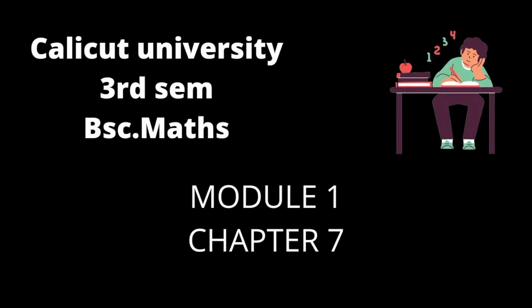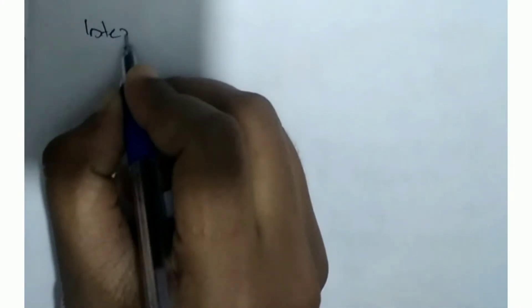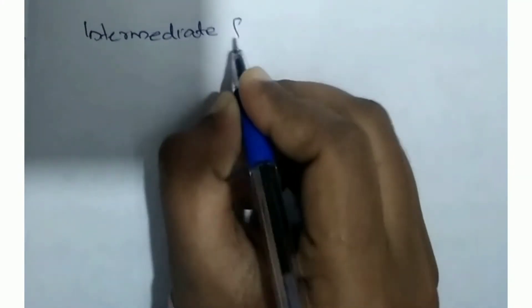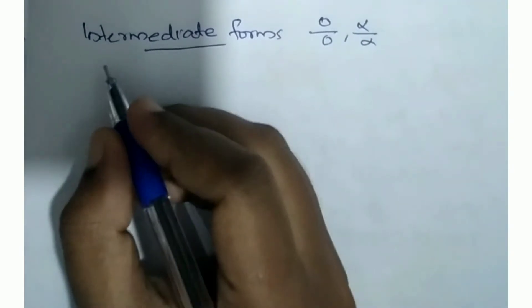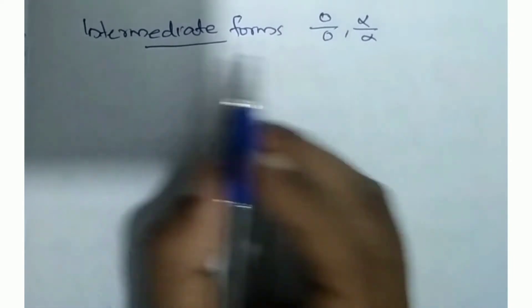Hi everyone. In Calicut University third semester Maths, we are going to cover the last chapter — the 3rd chapter. We have uploaded 6 chapters. We are going to check this chapter. It is called the L'Hôpital's rule, and it deals with indeterminate forms. We have 0 by 0 and infinity by infinity — these are called the indeterminate forms.